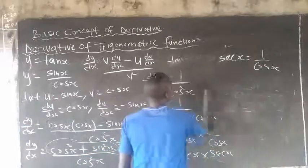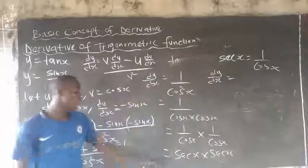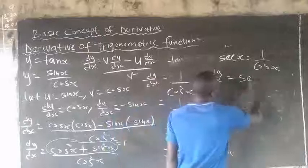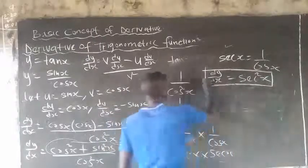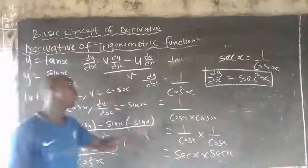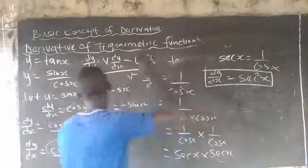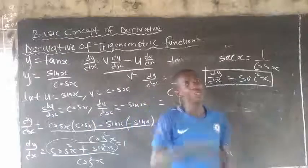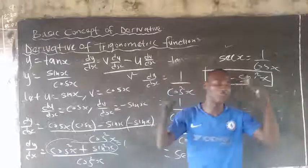It means that dy/ds equals sec s times sec s, which is sec squared s. And this is the derivative of tan s — the derivative of tan s is sec squared s. Please don't forget to like, comment, subscribe, and share the link with others. Thanks.